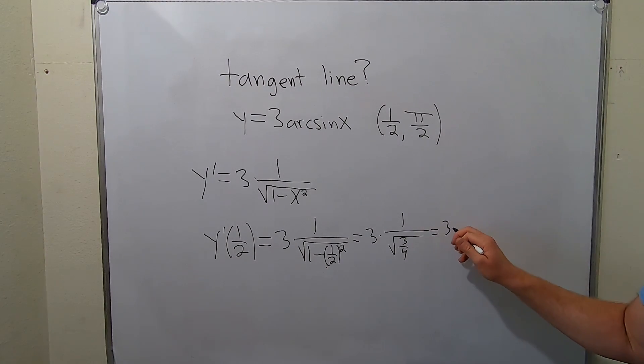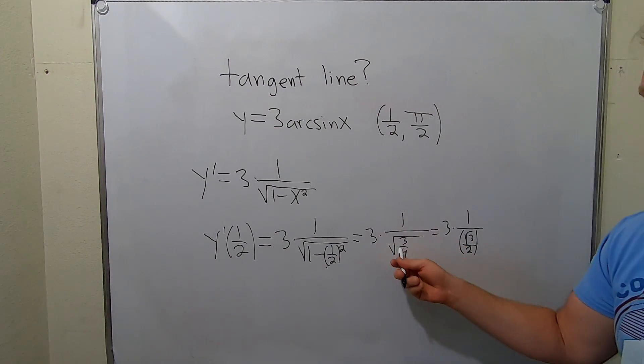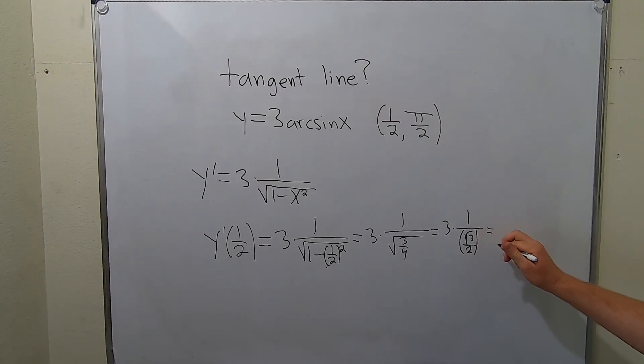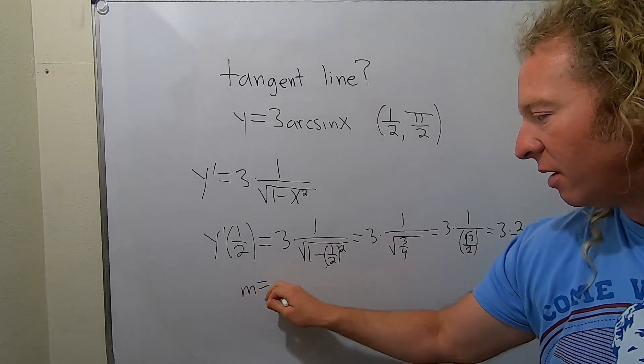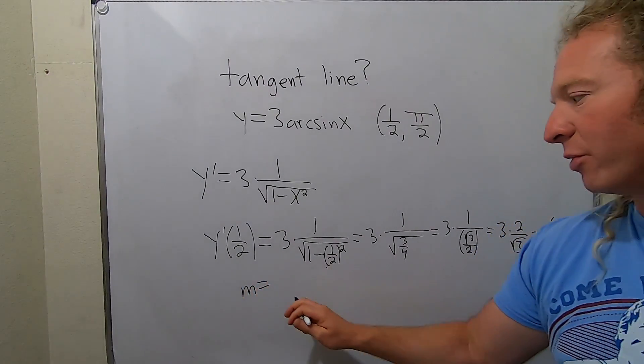So this is 3 times 1 over, and you can just take the square root of each piece here. So it's the square root of 3 over 2, because the square root of 4 is 2. 1 divided by this means you multiply by the reciprocal. This is 3 times 2 over radical 3. So this is 6 over the square root of 3. So that, my friends, is our m. Our m in this problem is equal to 6 over the square root of 3.